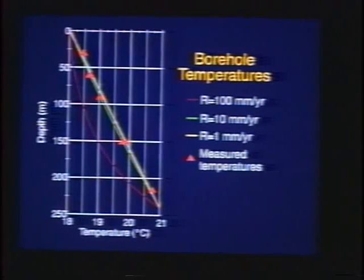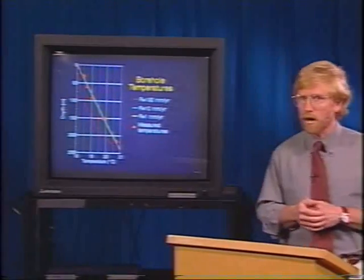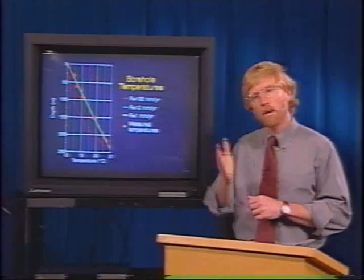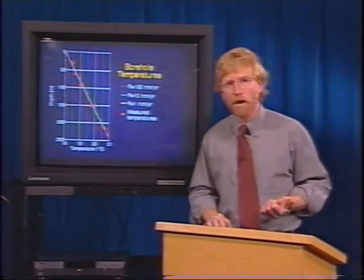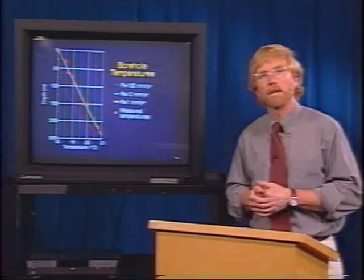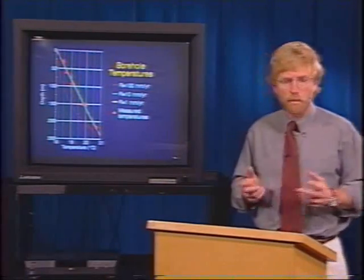The measured temperatures in one borehole at Frenchman Flat — from thermistors buried back down after coring, backfilled and left to equilibrate — are pretty linear, falling along the linear profile. This indicates that the rate of downward or upward flux is pretty small, probably less than about 10–20 mm/year, otherwise we'd see that convex behavior, which we don't. Thermal profiling is a neat technique, but not very sensitive when recharge rates are small. The best we can say is recharge is probably less than 10 mm/year.